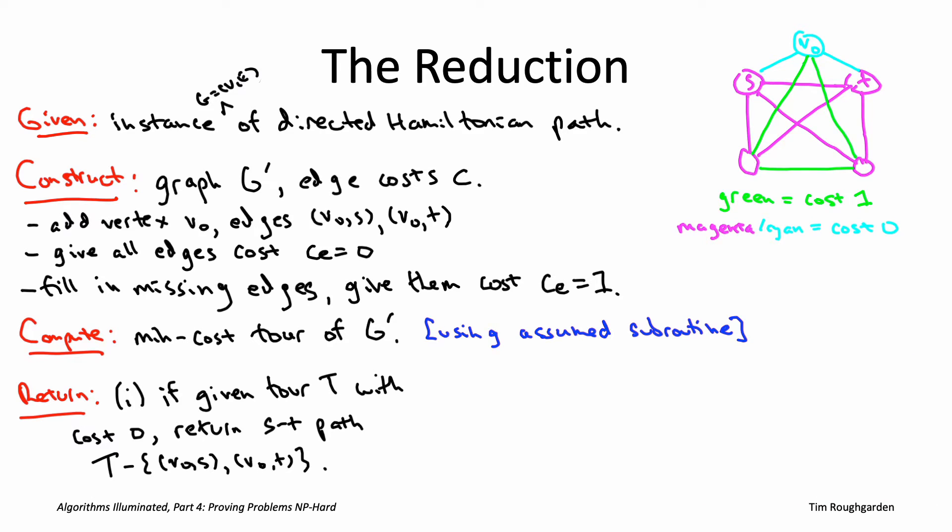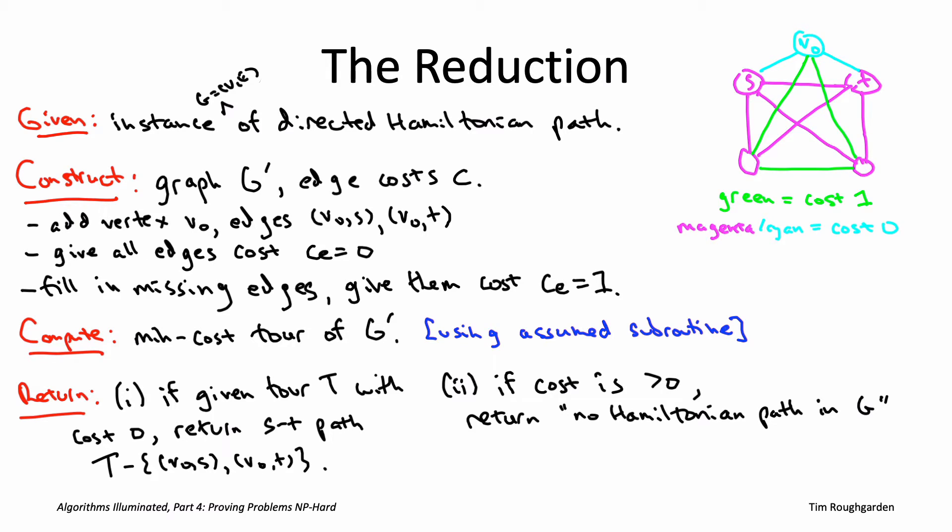That's the entire reduction. It just invokes the assumed subroutine for the traveling salesman problem once on graph G prime, and doesn't do much work outside the subroutine call. Constructing G prime takes at worst quadratic time in N where N is the number of vertices, so this certainly qualifies as a reduction — only one invocation of the subroutine and a polynomial amount of additional work.